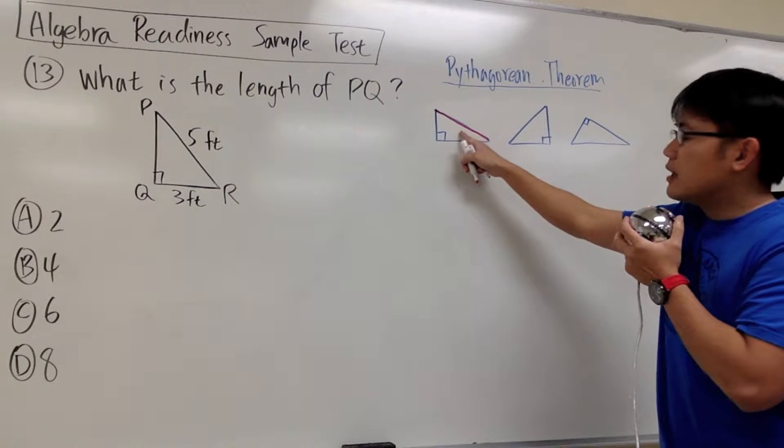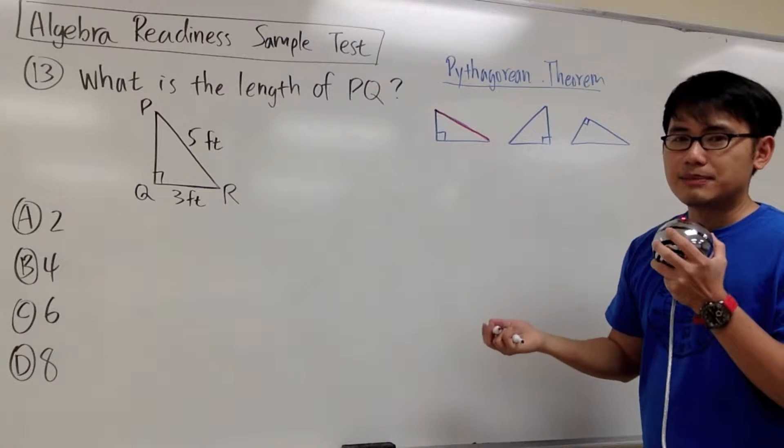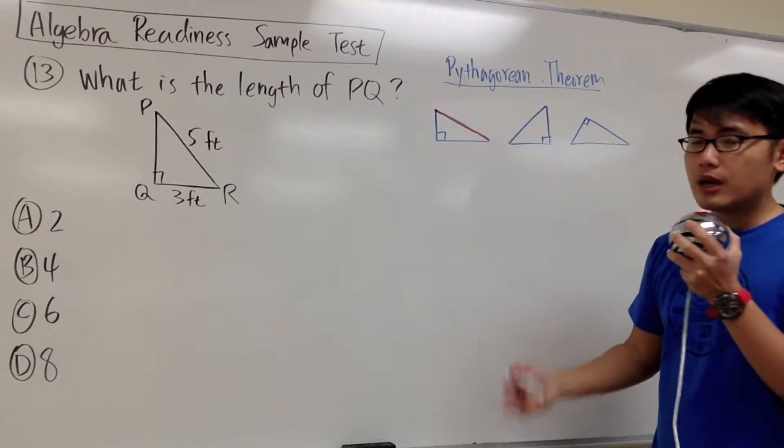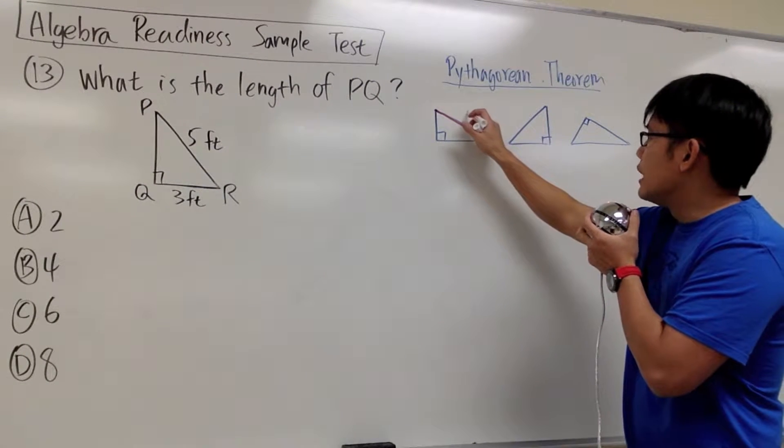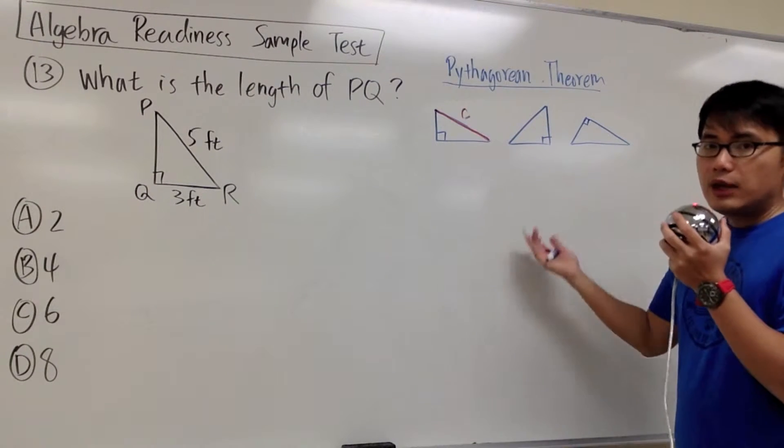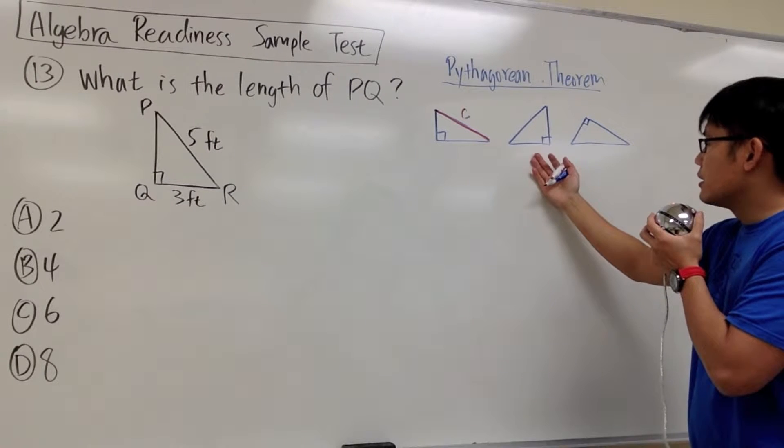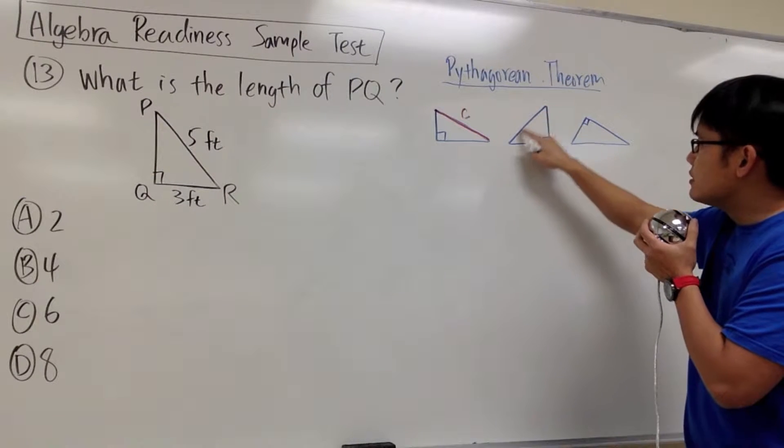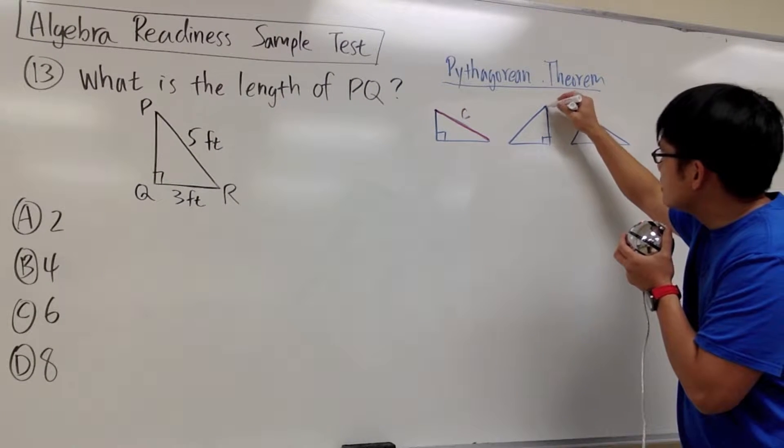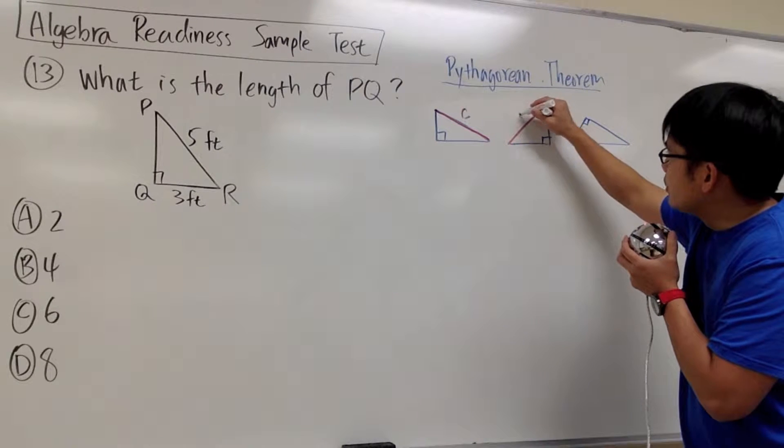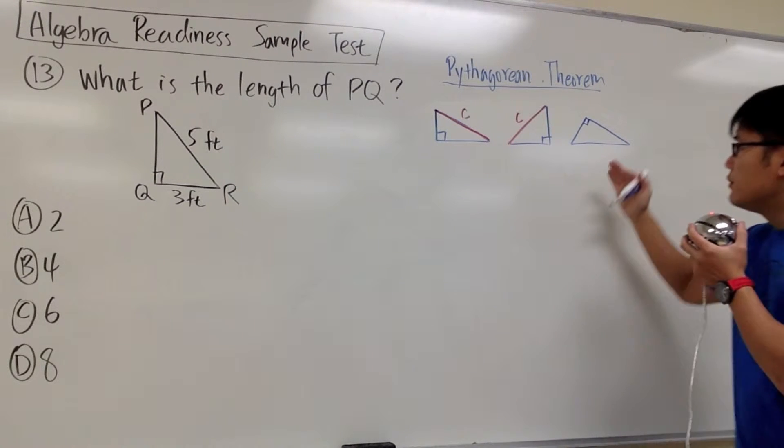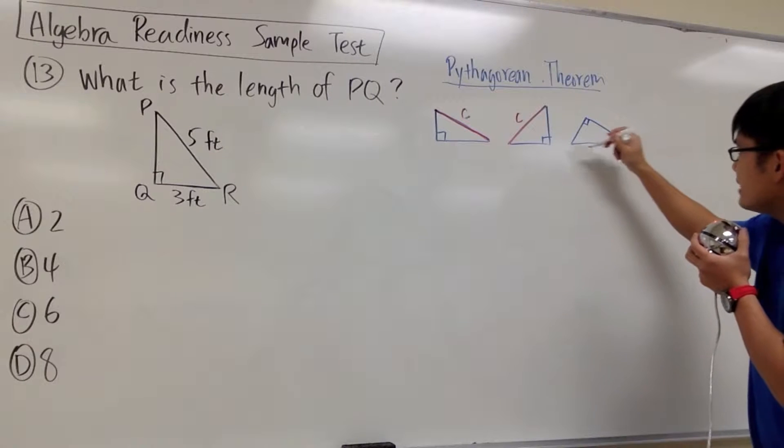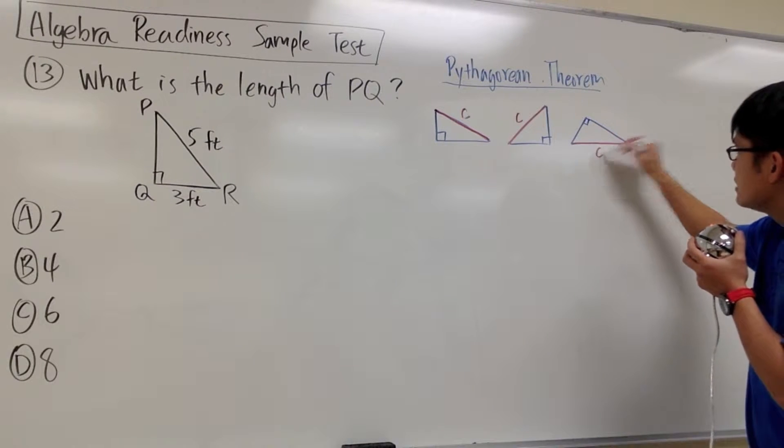The longer side of a right triangle actually has a special name, it's called the hypotenuse of the triangle. But at the moment, I'm just going to label this as C. Likewise, we'll do the same for the second one. For the second one, this is the longer side, I will color this into red and label this as C. And for the third one, here is the longer side, and I will label this as C.